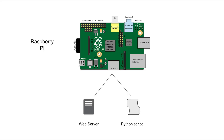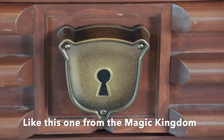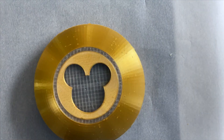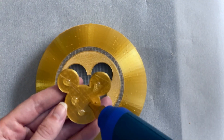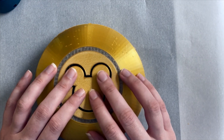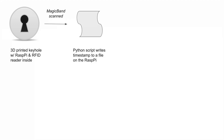I used a Raspberry Pi for the web server and to host a Python script. Our keyhole at home has a Raspberry Pi and an RFID reader inside — much like the MagicBand reader project that we did. I'll link that video below if you're interested. I was able to use the same Raspberry Pi, same setup for the RFID reader. The Python script writes a timestamp to a file that's on the Raspberry Pi.